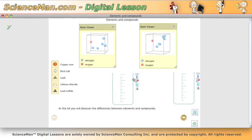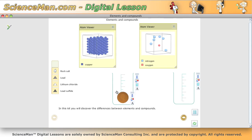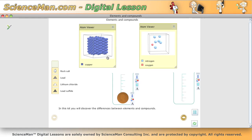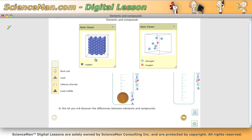Right here we have a couple of atom viewers that are going to allow us to peer into an actual substance. So what I'm going to do to start off is take copper and drop it into this beaker, and what we see here in the atom viewer is all the same type of atoms. Now if a substance has all the same type of atoms, then you're looking at an element.